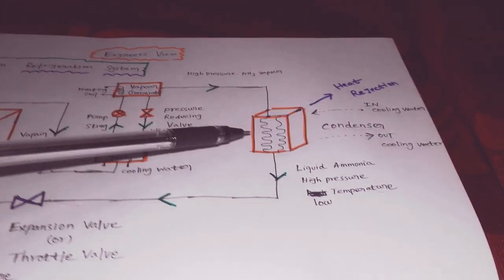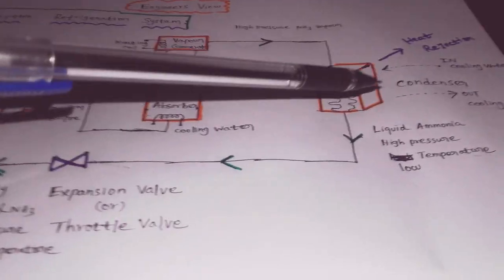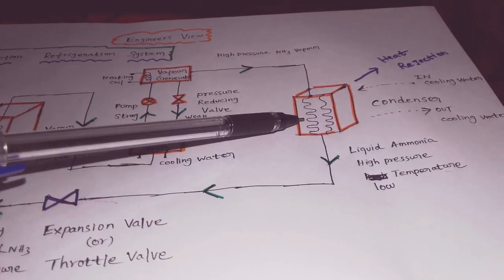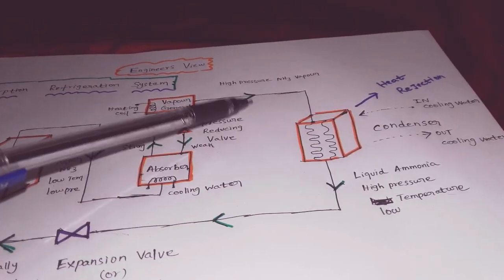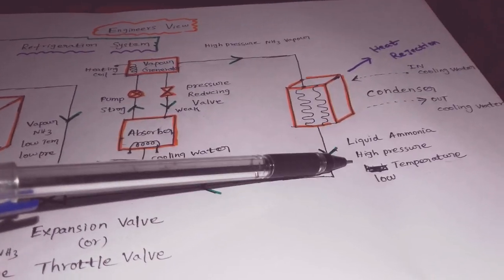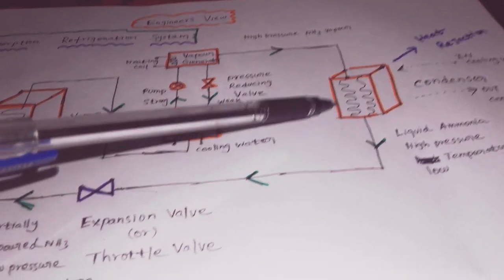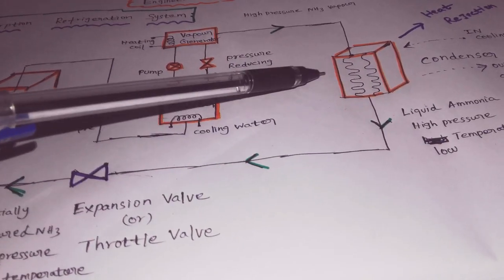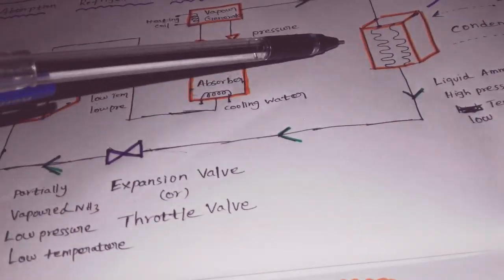If it is air-related, it will be air-cooled. After passing through the condenser, the ammonia rejects heat and converts to a liquid state. The result is liquid ammonia at high pressure and low temperature. The pressure remains constant in the condenser.